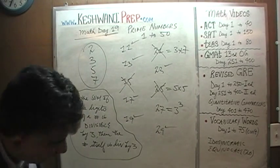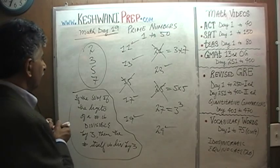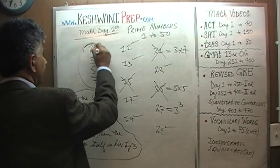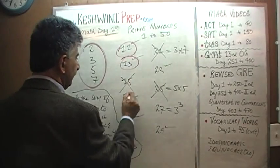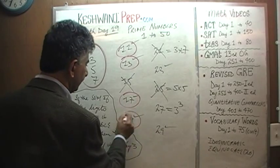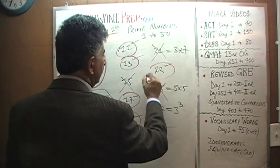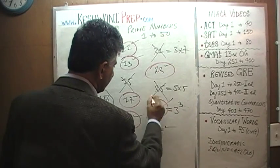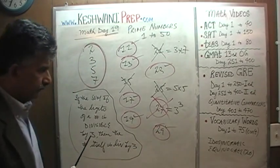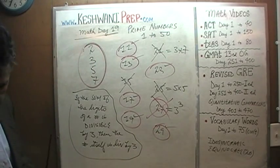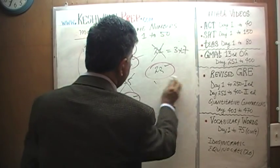Let's circle our prime numbers that we have so far. All of these are prime numbers: 11, 13, 17, 19, 23, and 29. Not 27 — 27 is not a prime number.